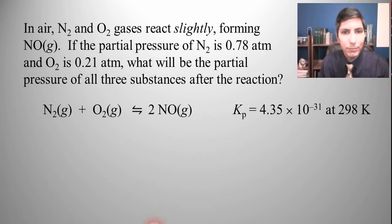So let's try another example. Let's take some air and bottle this air and we know that in air nitrogen and oxygen gases react ever so slightly to form nitrogen monoxide gas. If the partial pressure of nitrogen gas is 0.78 atmospheres and oxygen is 0.21 atmospheres, what will be the partial pressures of all three substances after the reaction? There's our reaction, the balanced equation, and the value for Kp. Now that is a really small equilibrium constant, way less than 10 to the minus fifth, so I think we can use the five percent rule on this but we are going to double check.